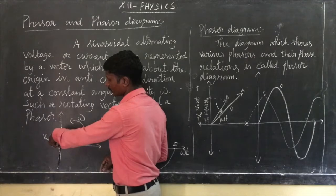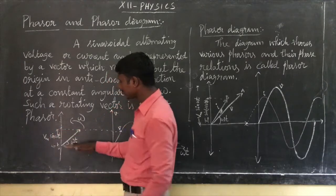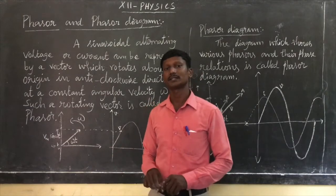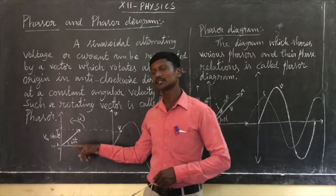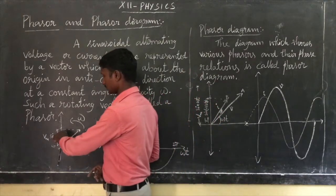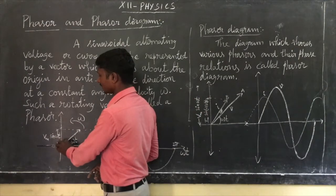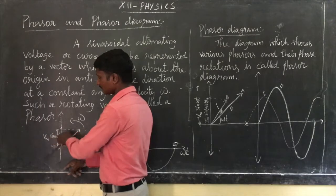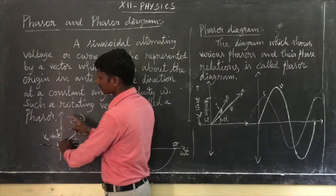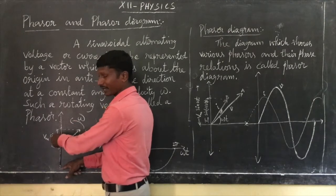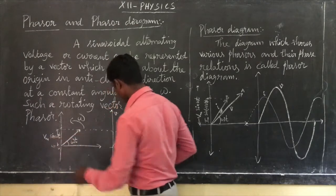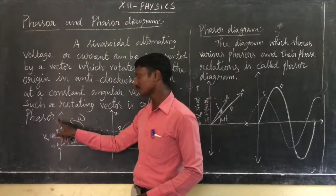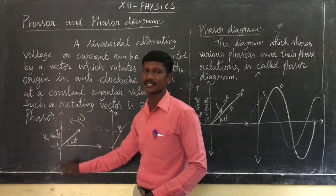At 180 degrees, theta is equal to 180 — it is positive. 180 is equal to zero; that is highest. At 270 degrees it is minus one. At 360 degrees it is equal to zero, and 720 is equal to one — that is minimum. That is minus to maximum, from negative maximum to positive maximum — this is also oscillating.